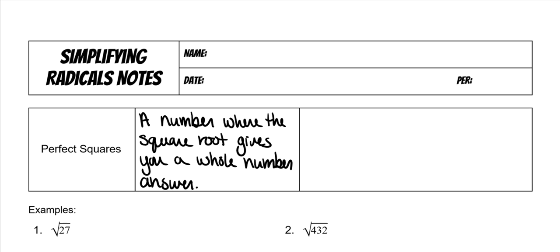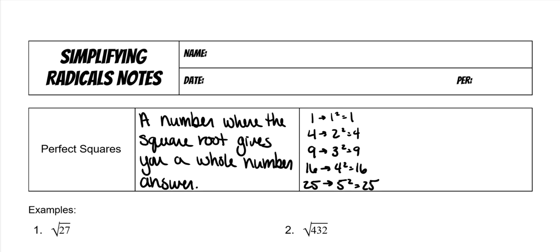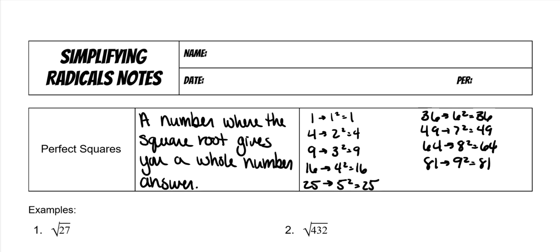So perfect squares: 1, because 1 squared is equal to 1. The next one is 4, because 2 squared is equal to 4. Then 9, because 3 squared is 9. 16, because 4 squared is 16. 25, because 5 squared is 25. 36, because 6 squared is 36. 49, because 7 squared is 49. 64, because 8 squared is 64. 81, because 9 squared is 81. And 100, because 10 squared is 100.